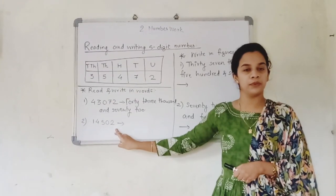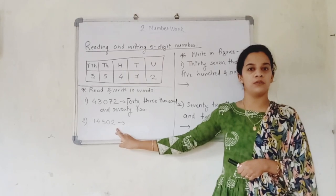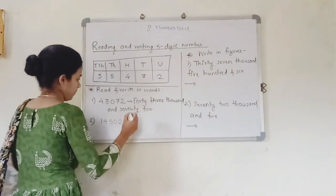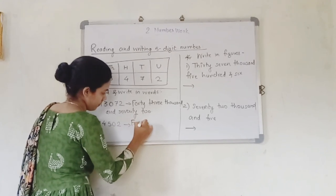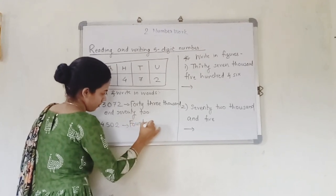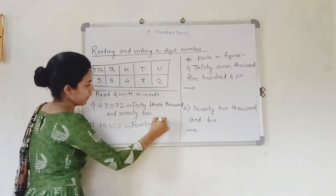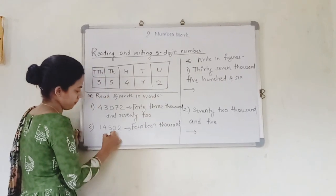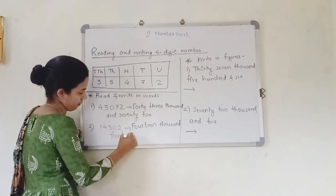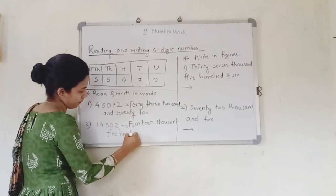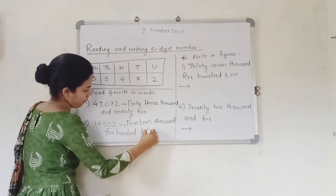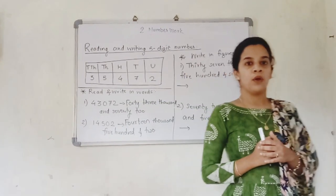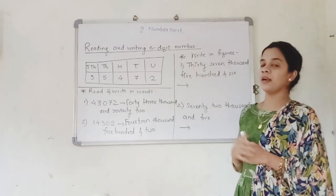How are you going to read it? It is 14,502. So this is clear for you now. We will just focus on the next part.